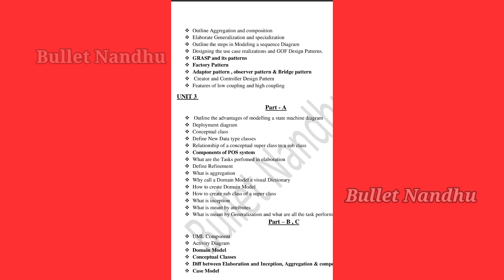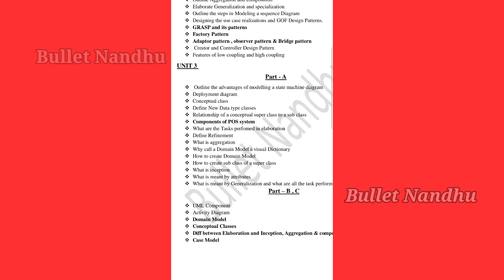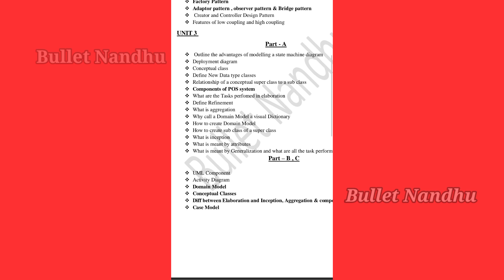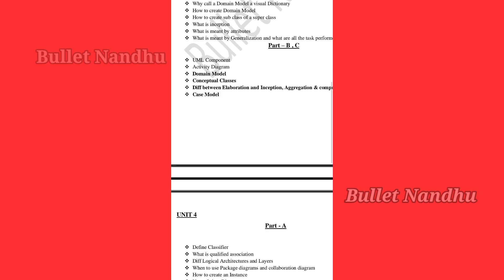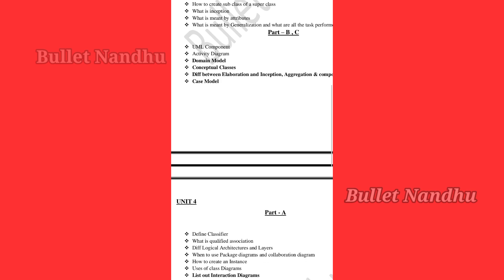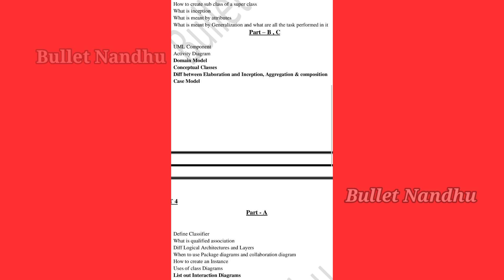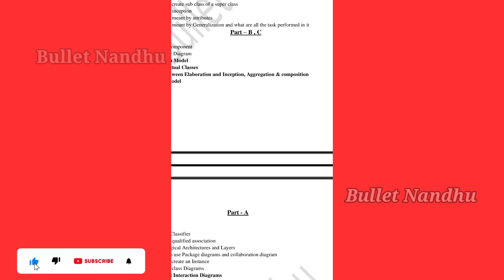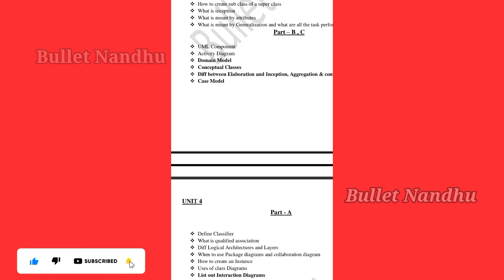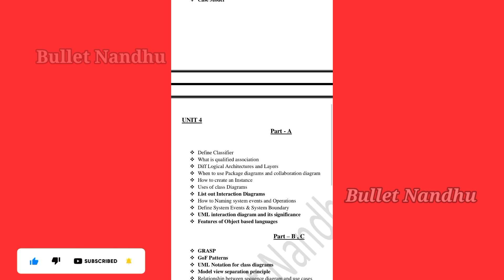Unit 3 topics for Part B and C include: Components of a POS System, Concept Classes, the Difference between Elaboration and Inception, Aggregation and Composition, and the Use Case Model. These are among the most important questions.